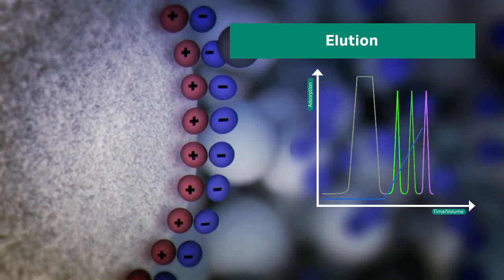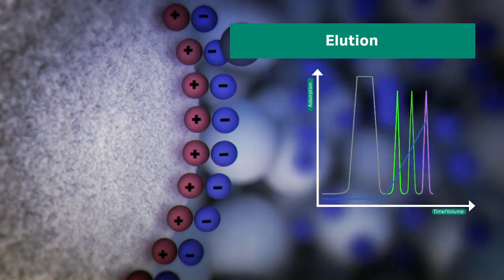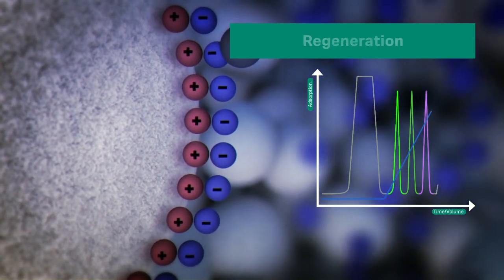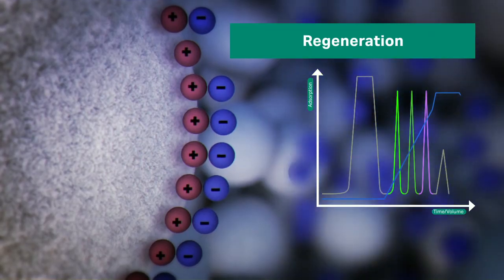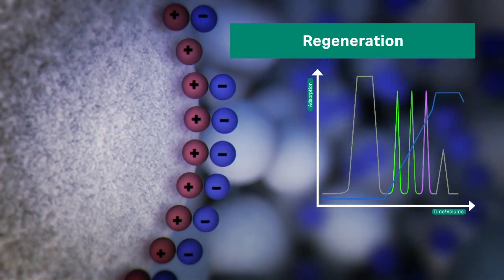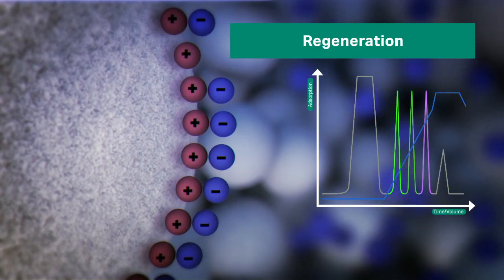Proteins are desorbed relative to the number of charged groups on their surface. The final step, regeneration, removes all molecules still bound. This ensures that the full capacity of the stationary phase is available for the next run.